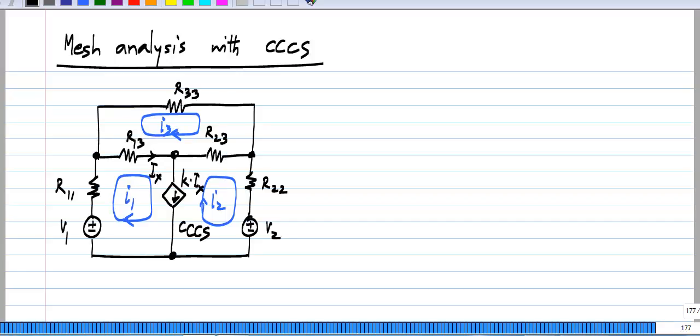I will show how to carry out mesh analysis when we have a current controlled current source. The circuit I have taken is similar to what I had before, and earlier I had shown you how to carry out the analysis when I had an independent current source in this branch.